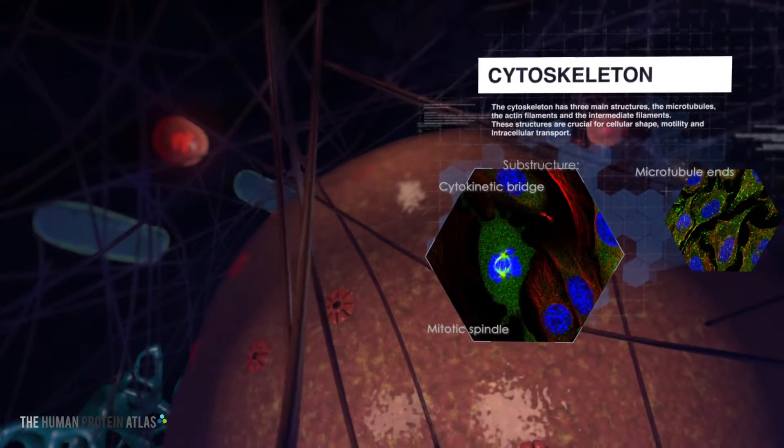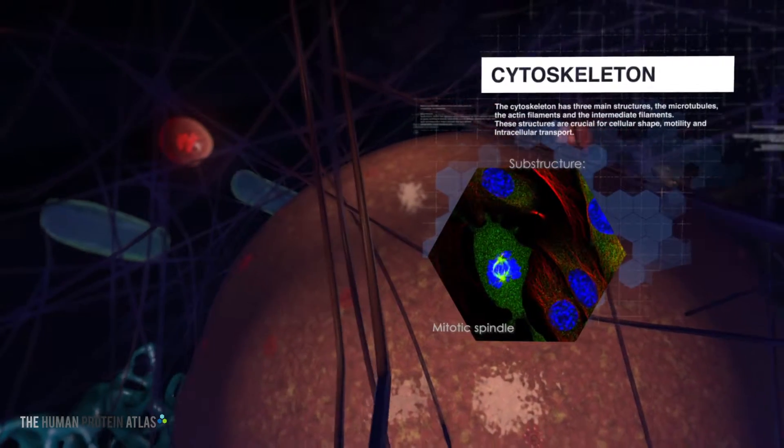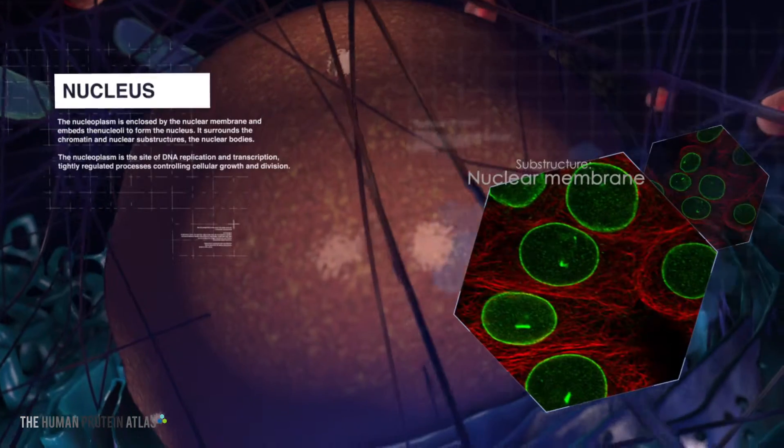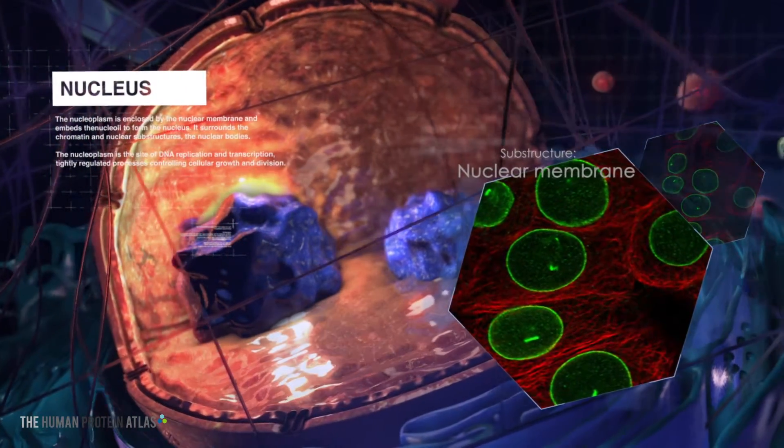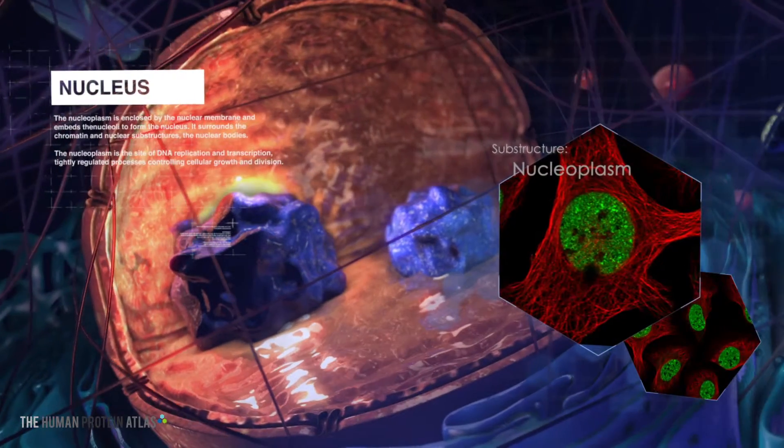The cytoskeletons control motility in cell division and form the mitotic spindle. Our genetic information, encoded by DNA, is contained in the nucleus, shielded from the cytoplasm by the nuclear membrane.